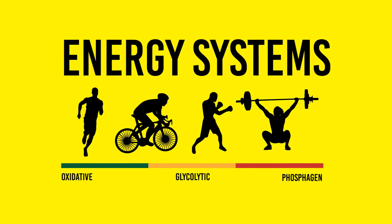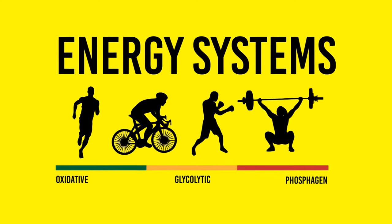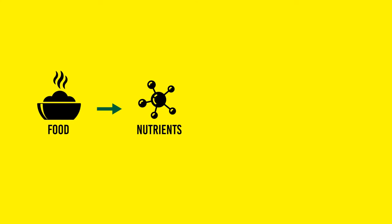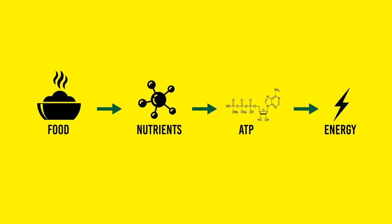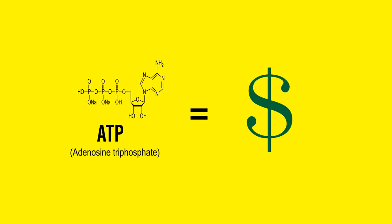Instead of trying to figure things out for yourself, this will give you a starting point. And I know I've talked about this in my past videos, but this will be more in-depth. So to do any kind of work you need energy. The food you eat gives you nutrients, which are converted to ATP, and the ATP is broken down to provide energy for an activity. ATP basically powers all the biological work in your body, including muscular contractions.